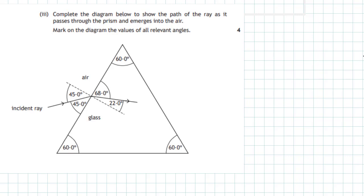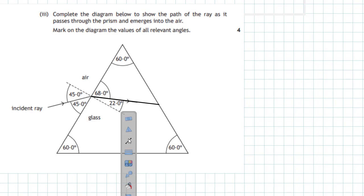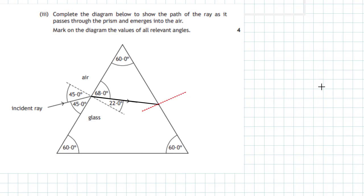Question 9 Part 3: Complete the diagram to show the path of the ray as it passes through the prism and emerges into the air, marking all relevant angles. It's a four-mark question, so take your time. We start by extending the initial ray which has entered the block. The ray strikes the surface inside the glass, and I need to draw the normal at right angles to that surface. We then need to find the angle inside the glass.